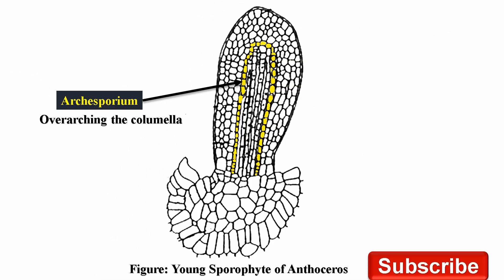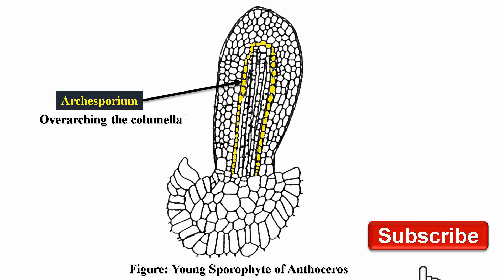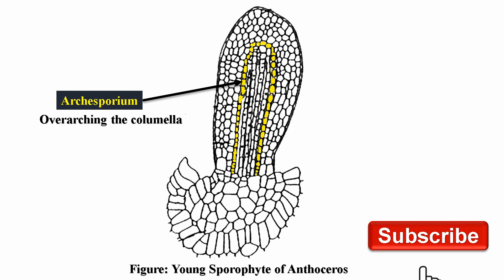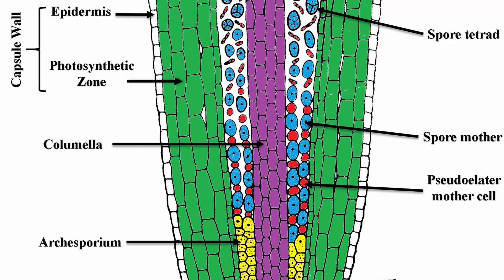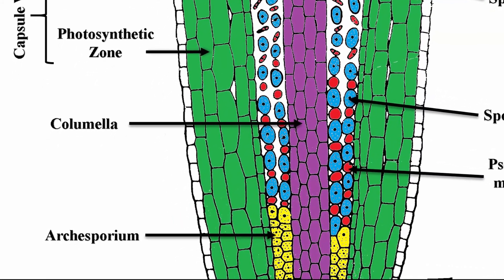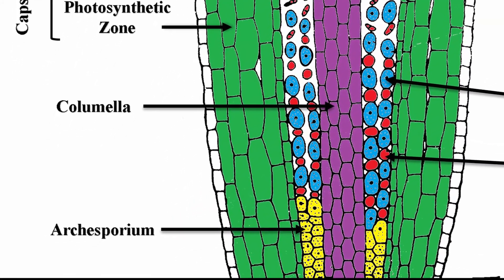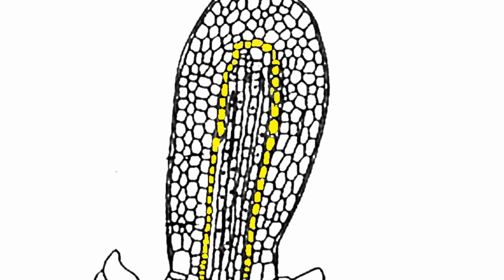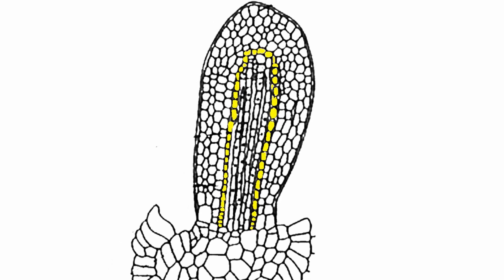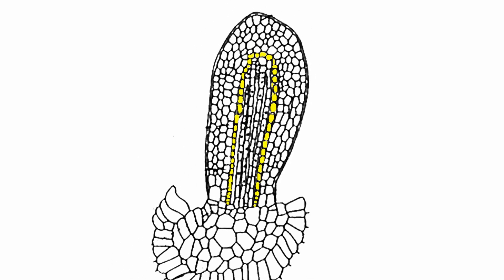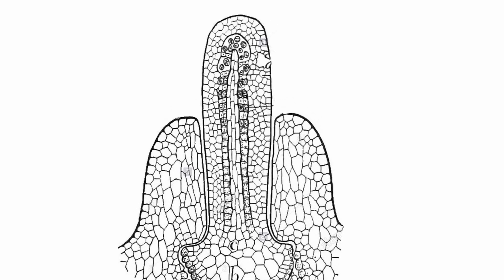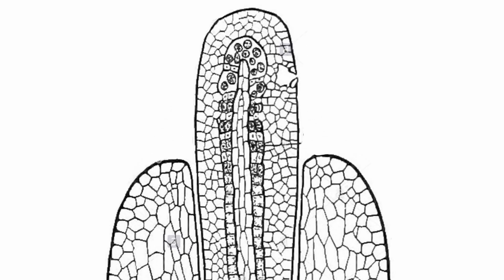The archesporium when young overarches the rounded apex of the columella and gives the appearance of a dome. The cells of the archesporium can easily be distinguished from the sterile cells of the columella by their denser protoplasm. In some species, the archesporium may remain single-layered throughout like in anthoceros erectus or it gets divided periclinally to be two or up to four layered.